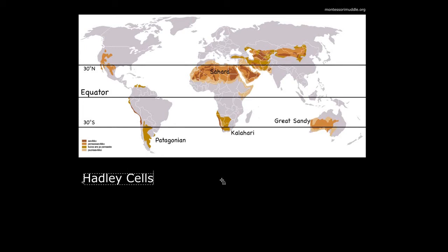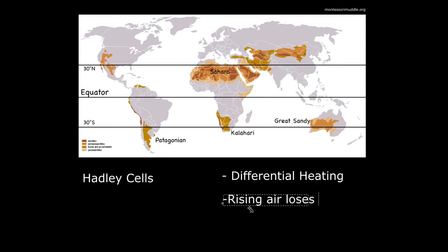The first thing that we'll need to think about is the differential heating of the surface of the Earth. So, differential heating is one very important thing. And another thing that we'll need to think about and keep in mind is that when air rises, it loses its moisture. So, rising air loses moisture. These two things combined will help us to understand why we have deserts at 30 degrees north and 30 degrees south.